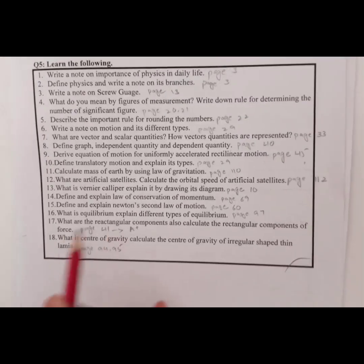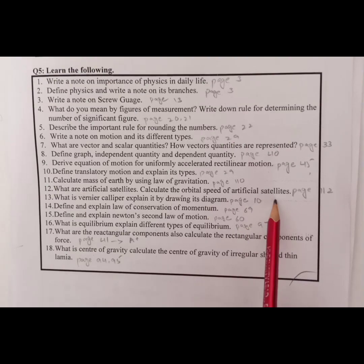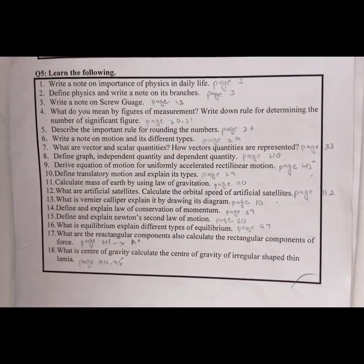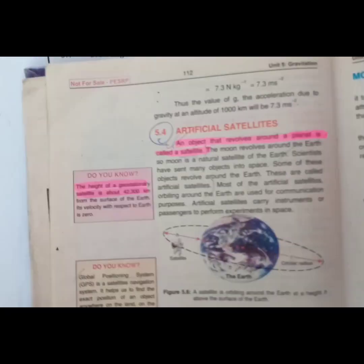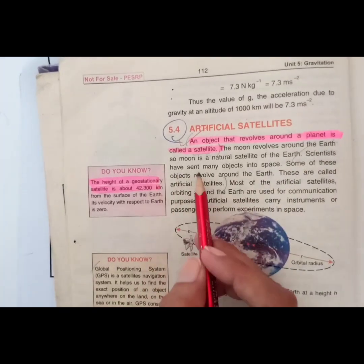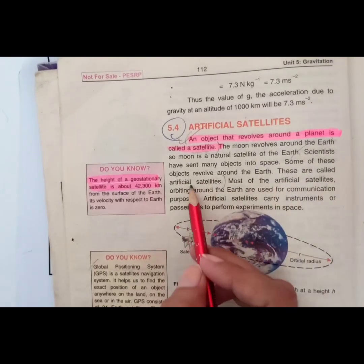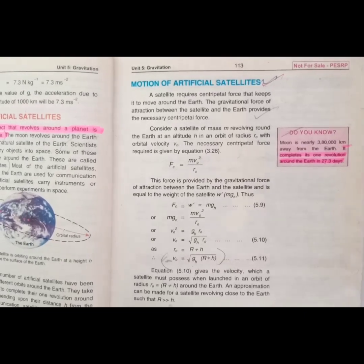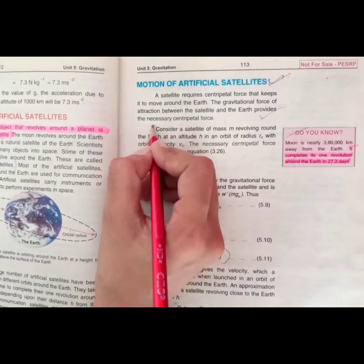Now we will move to question number 12: what are artificial satellites? Calculate the orbital speed of artificial satellites. The answer will be on page number 112. Scientists have sent many objects into space; some of these objects revolve around the Earth — these are called artificial satellites. You also have to calculate the speed of artificial satellites from this.